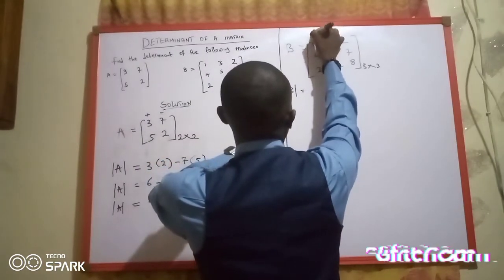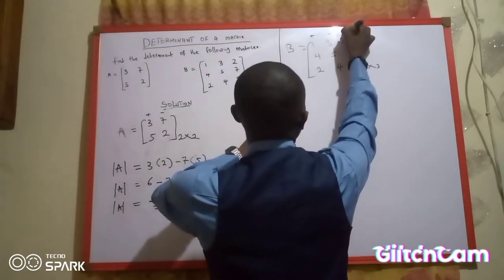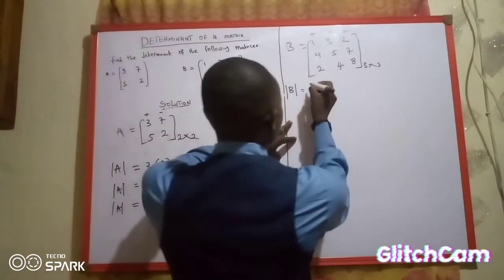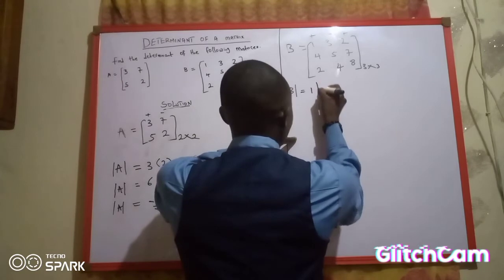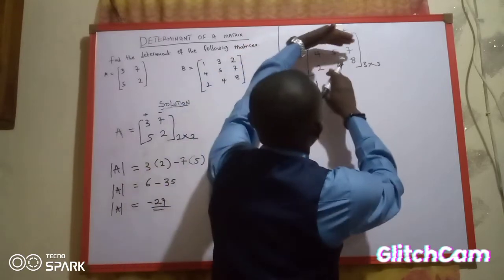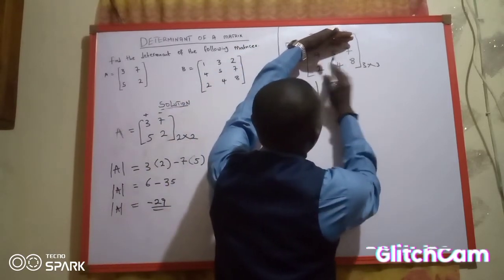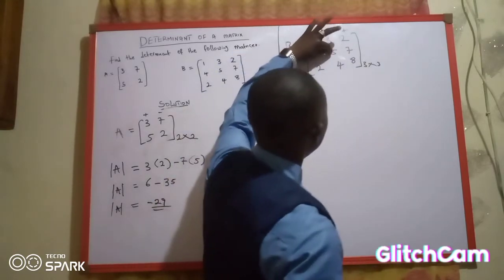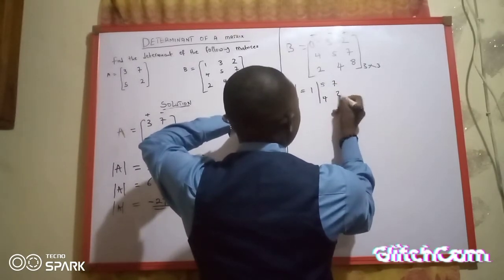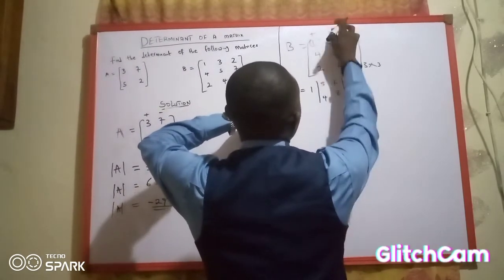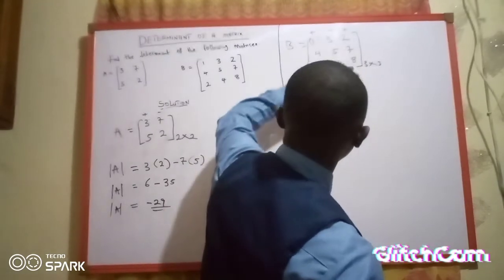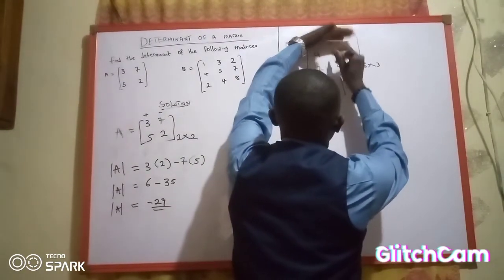To find the determinant of this matrix, remember this rule: the first column is positive, the next is negative, the next is positive. You pick this first element, 1, open bracket, then cover the row and column of this 1 — we cover this place and this place — and we are left with 5, 7, 4, and 8. Then this next place is negative: we have negative 3. Open bracket and cover the row and column of this 3.